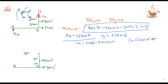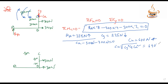Here we can see the reaction components. The component is the data. So the component is the component. The value of the reaction is 640.8 N.